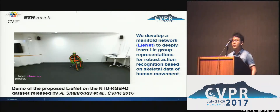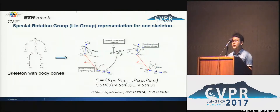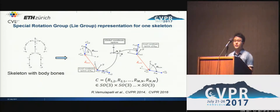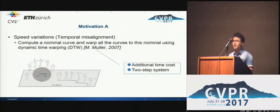As we can see, our proposed LieNet method can predict the right action labels with high accuracy. For representing 3D human skeletons, two CVPR works suggested a Lie group representation. In particular, they proposed to use rotation matrices to encode relative geometry between any pair of body bones. As a result, the feature of a moving skeleton becomes a curve on the product Lie group.